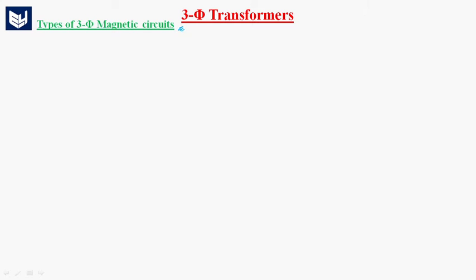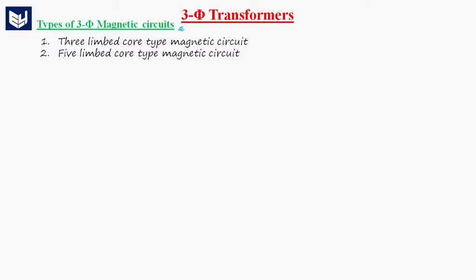Now we will see the types of three-phase magnetic circuits. Basically, depending on the construction, we have two types of magnetic circuits. One is three-limbed core and another one is five-limbed core. The three-limbed core has three legs and the five-limbed core has five legs. Depending on the magnetic core of the transformer, we have these two types.